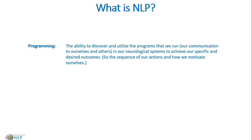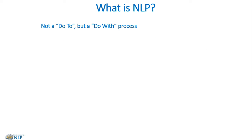Programming then is the ability to discover and to utilize the programs that we run in our neurological systems to achieve our specific and desired outcomes — how we communicate with ourselves, the sequence of our actions, and how we can motivate ourselves. In other words, NLP is about how we use the language of the mind to consistently achieve our specific and desired outcomes.